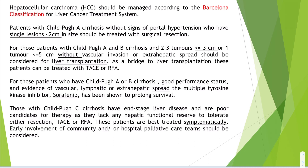Patients who are quite ill with Child-Pugh C cirrhosis and end-stage liver disease are poor candidates for therapy because they lack hepatic functional reserve to tolerate resection, TACE, or RFA. Liver transplant is out of the question as the tumor has already spread or metastasized. These patients are best treated symptomatically, and community and hospital palliative care teams should be involved.